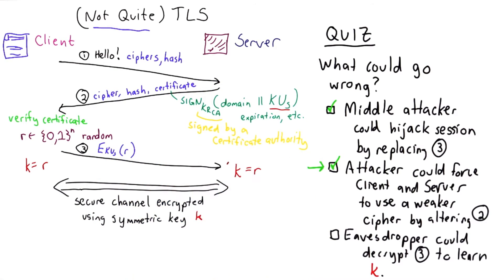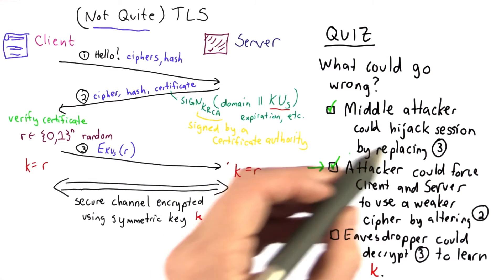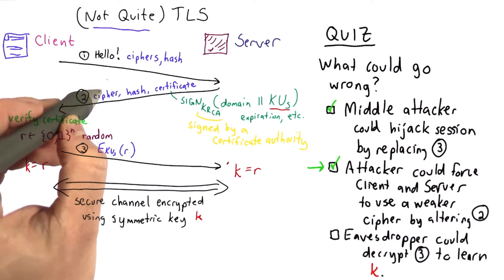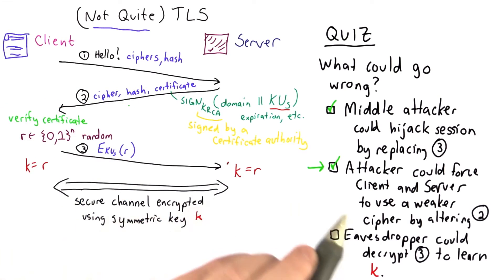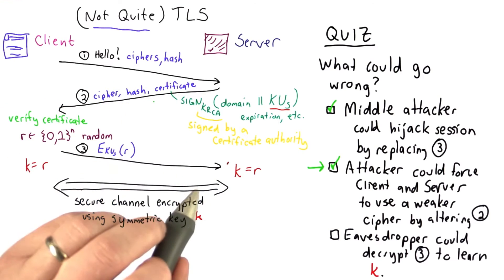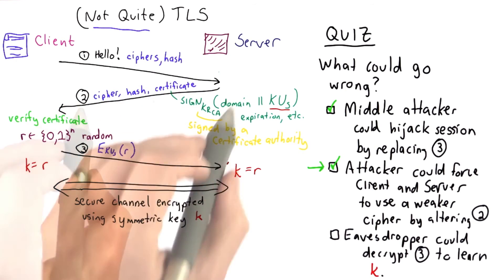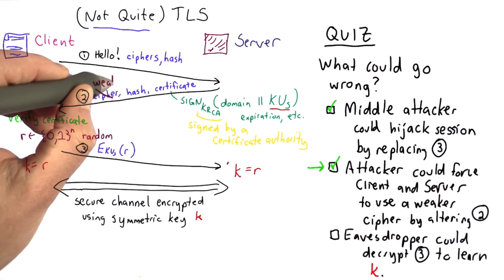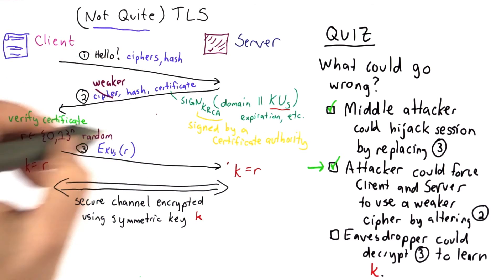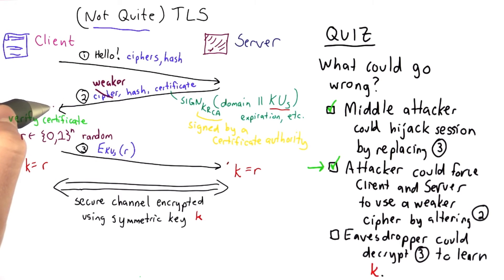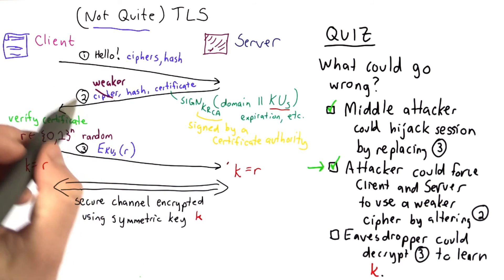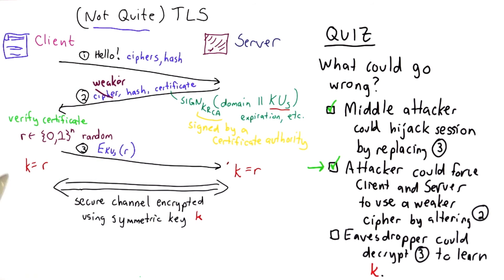The other answer that's true is that the attacker could easily force the client and server to use a different cipher. In step 2, the server responds with the selected cipher and hash, and this is an unencrypted message. An attacker who intercepts it could change these ciphers to something weaker. If the client supports the weaker cipher, the client has no way to know that the server supports a stronger cipher, and will settle for the weaker one selected by the attacker.